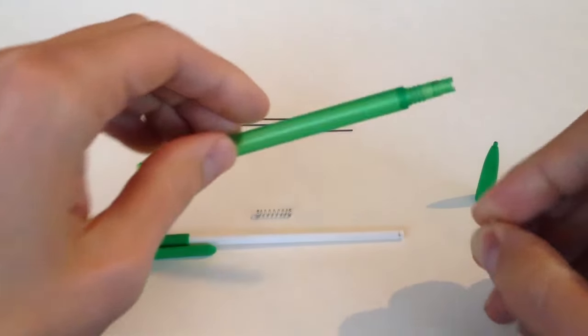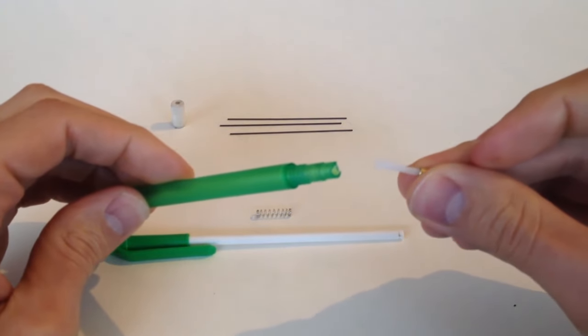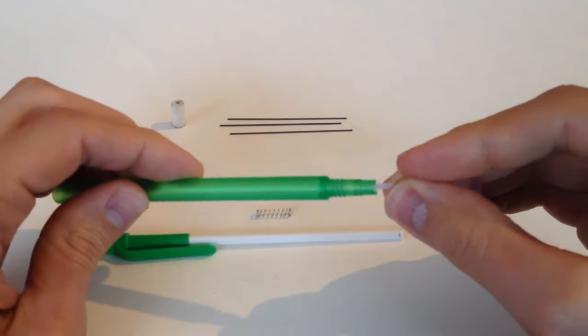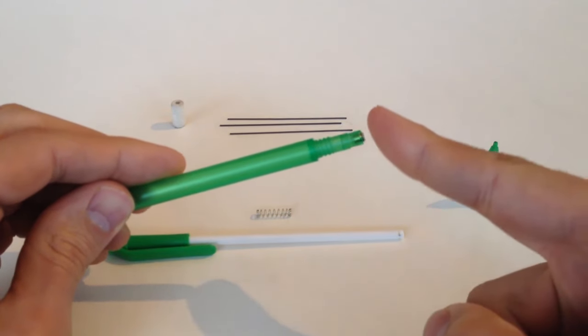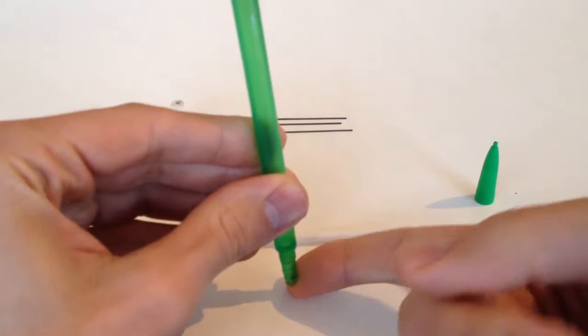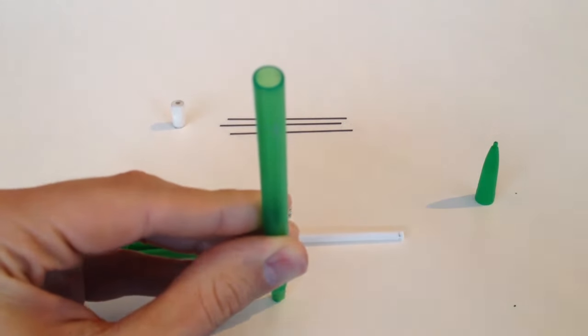Next, at the small threaded end of the body, insert the snap plug end of the chuck into the body. Then, without letting the chuck fall out, place the pencil upright with the chuck ring down against the table.